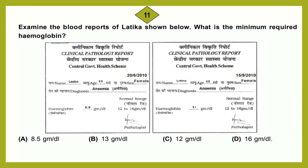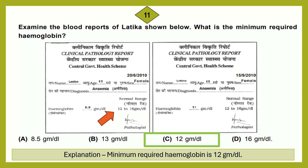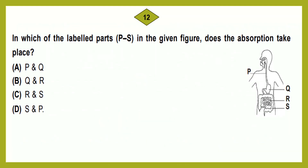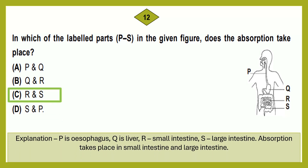Question number 11: Examining the blood reports, what is the minimum required hemoglobin? The correct answer is option C, 12 gm/dl. The minimum required hemoglobin in blood is 12 gm/dl. Question number 12: In which of the labeled parts P, Q, R, S in the given figure does absorption take place? The correct answer is option C, R and S. P is the esophagus, Q is the liver, R is the small intestine, and S is the large intestine.